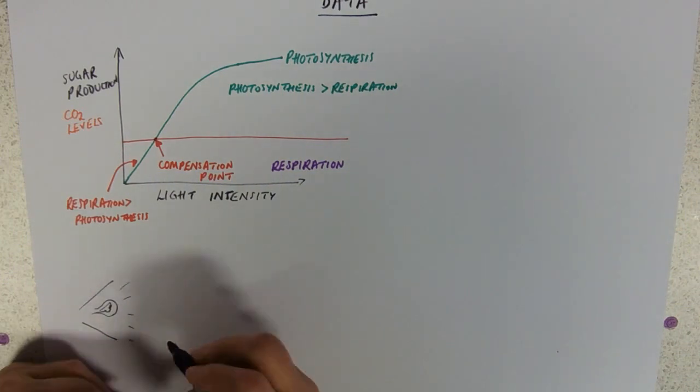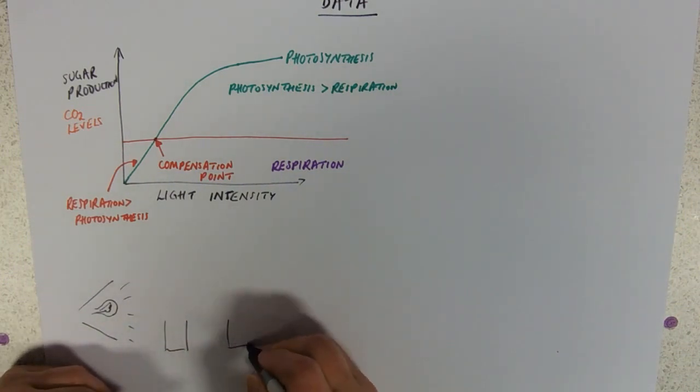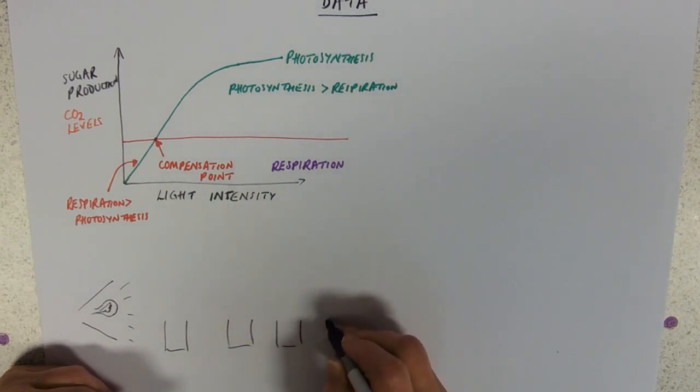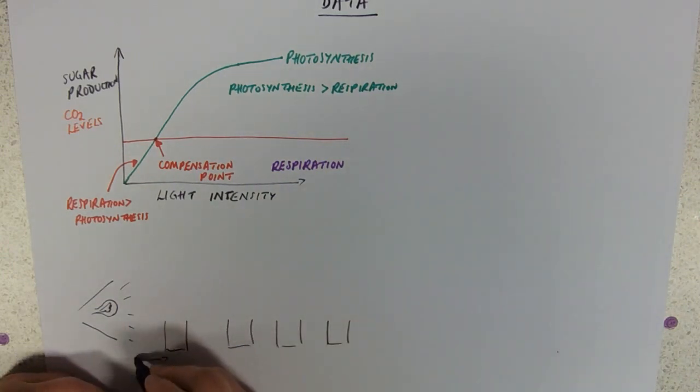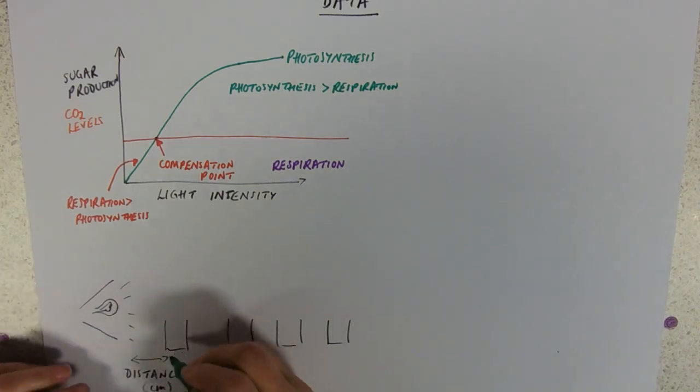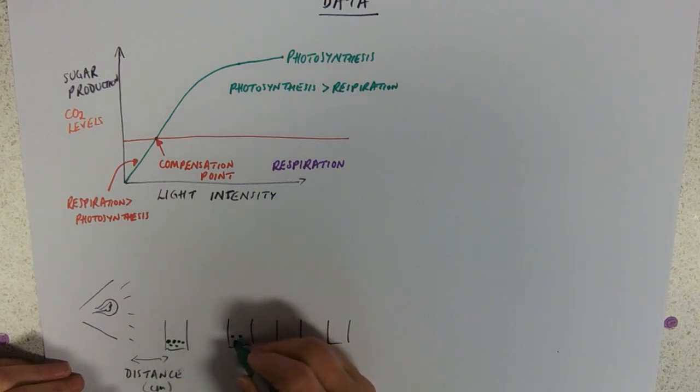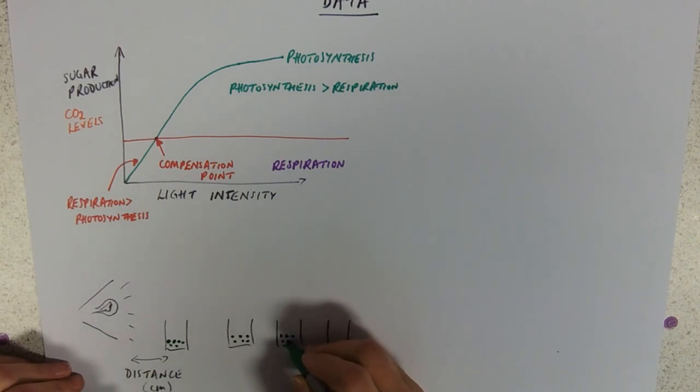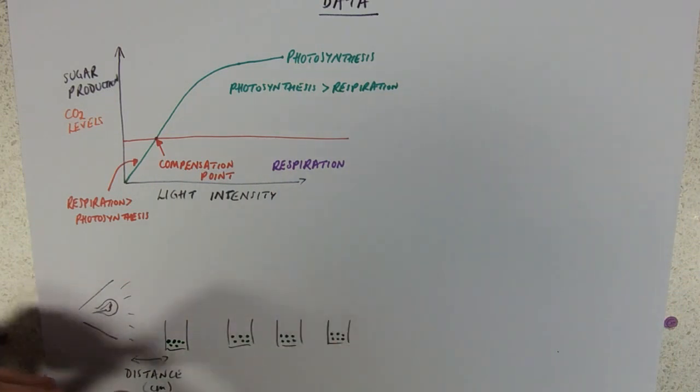You've got your lamp there. Set up your little pots, different distances away. Our independent variable is the distance in centimeters. As you get further away, these little algae balls get less and less and less light. You need to put the same number of algae balls, obviously, in each one. Otherwise, it wouldn't be a fair test. Otherwise, you can't compare the results.